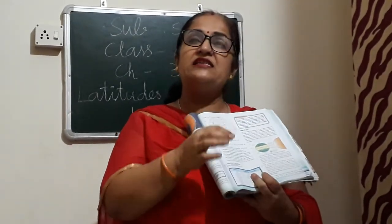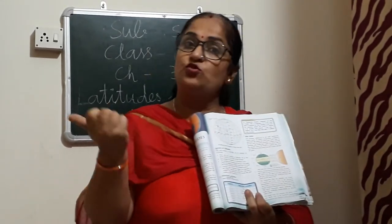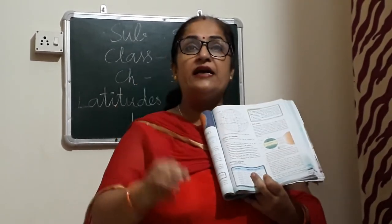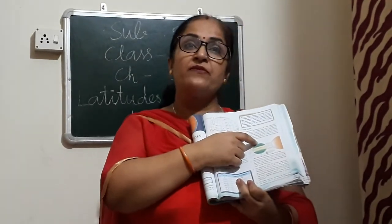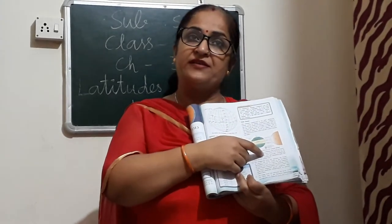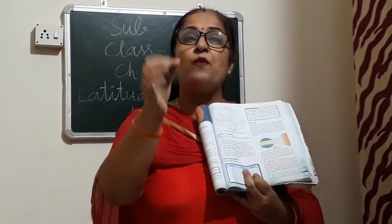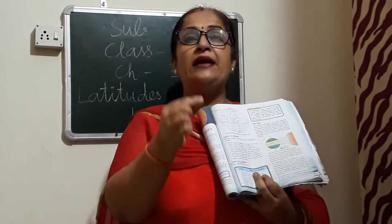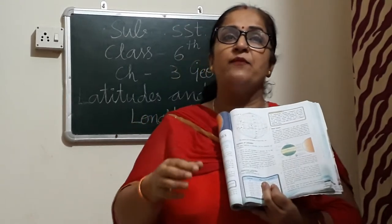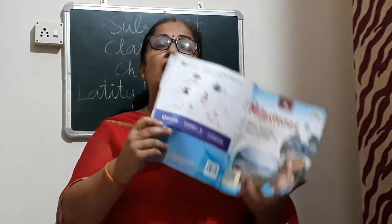The last one — the blue area you can see — this is the frigid zone. The word 'frigid' means extremely cold. There are two frigid zones: the northern frigid zone and the southern frigid zone. These zones receive very slanting rays from the sun, meaning very little heat, which makes the climate of these zones very cold.